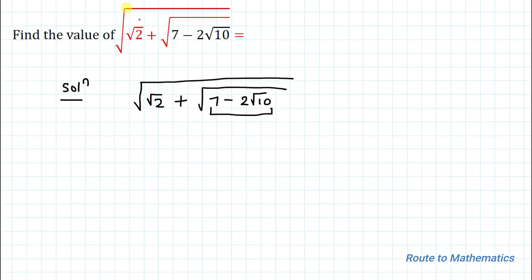Finally we are getting 7 minus 2 root 10 equals to root 5 minus root 2 whole square. Just put this value here.